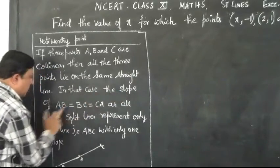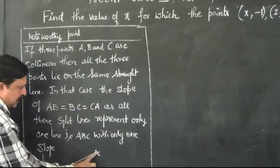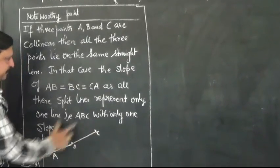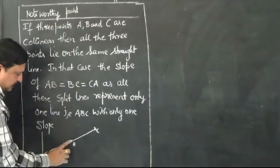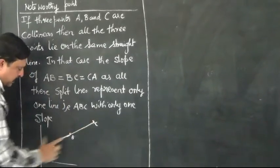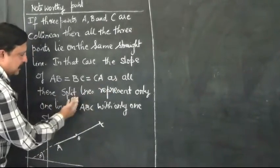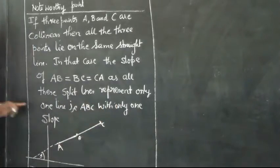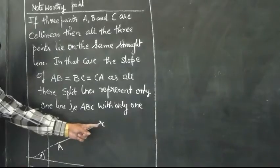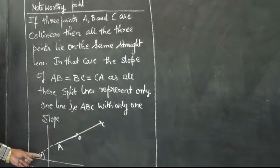In that case, the slope of AB, BC, or CA - they are all equal slopes. The slope of AB is equal to slope of BC or slope of AC, they are all equal because all these straight lines represent only one line, that is ABC with only one slope.